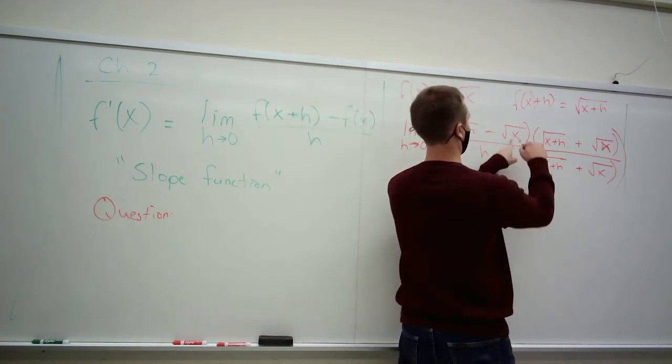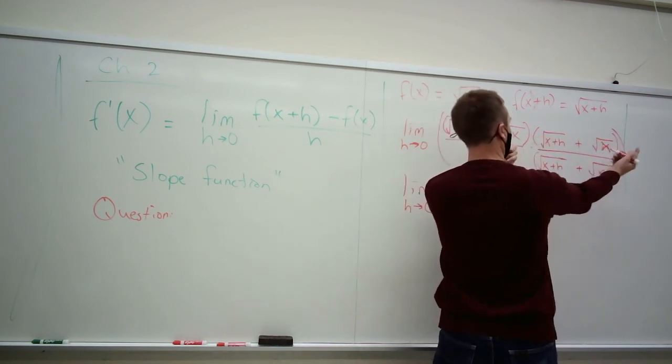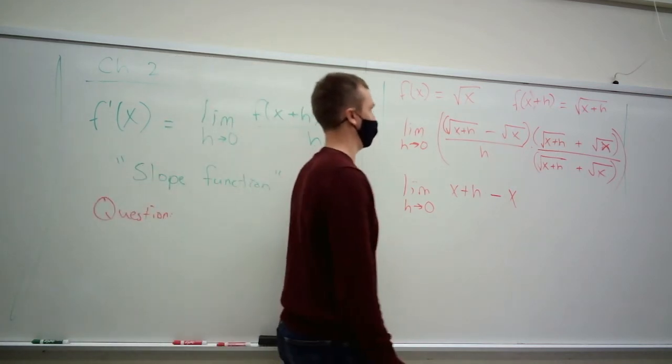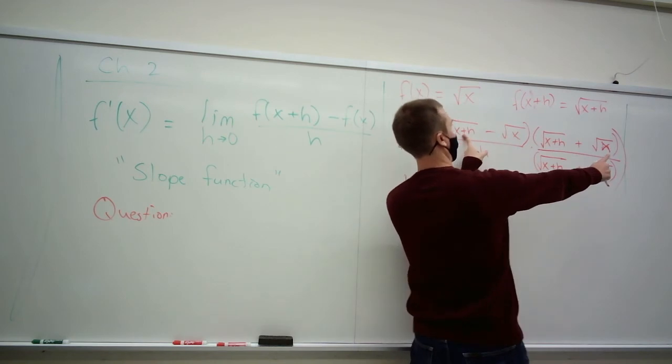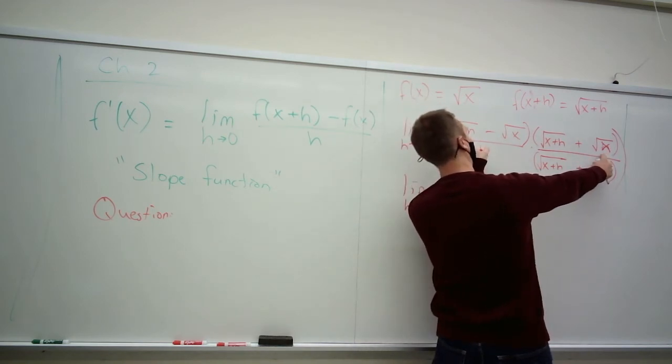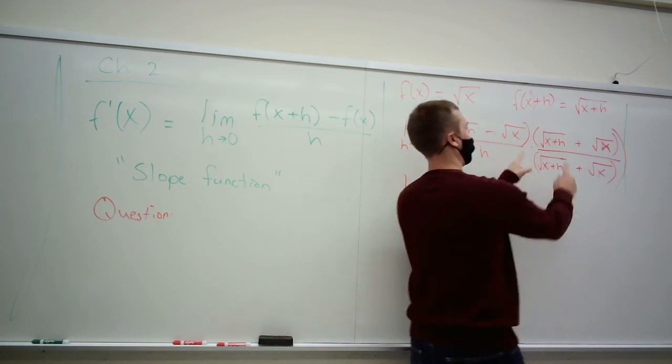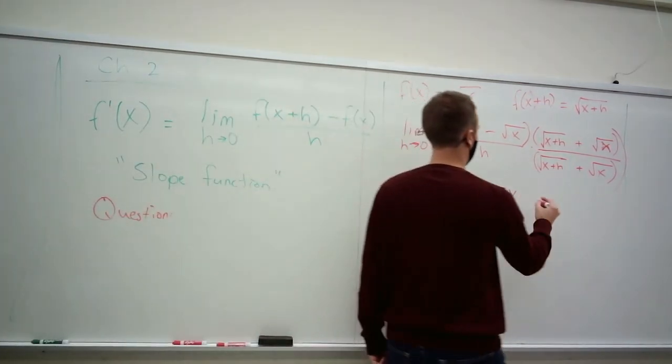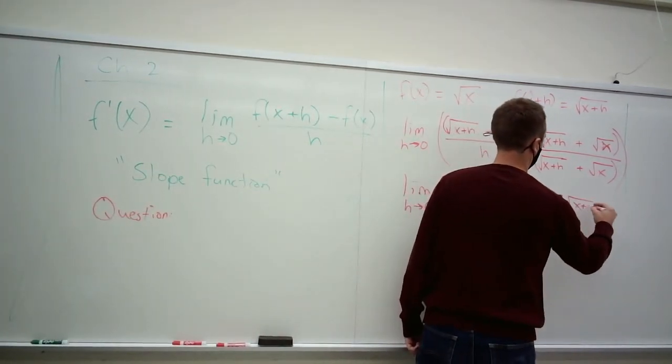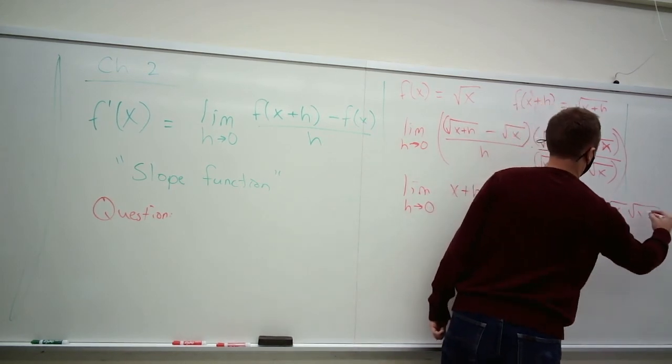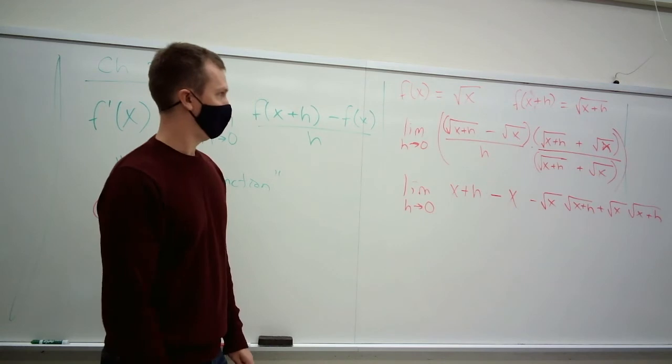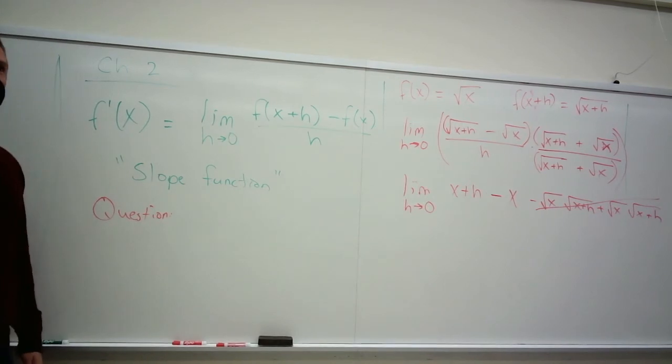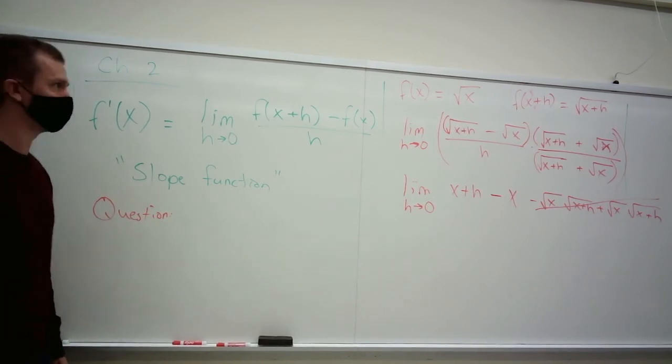You also get minus this times this. That's just x. You also get middle terms, which are positive root x plus h times root x. And you get minus root x plus h times root x. Those are the same, but they have the opposite signs. So, when you write them down, they go all the way of the dodo bird. Conjugates are awesome. They're just really great.